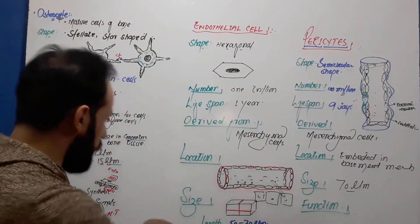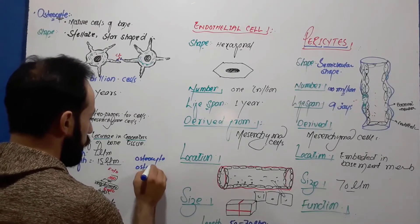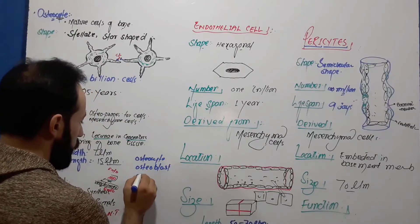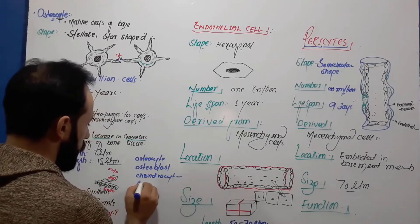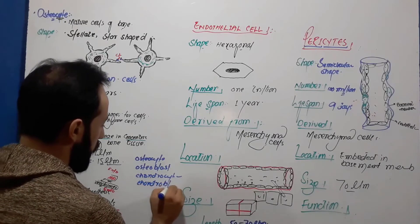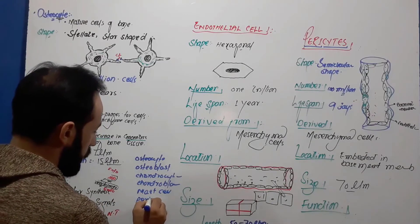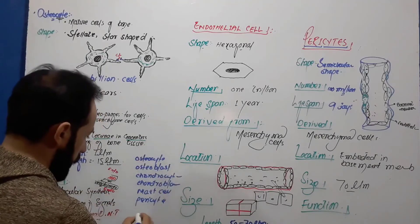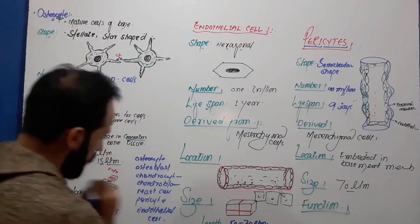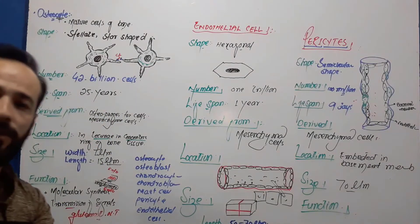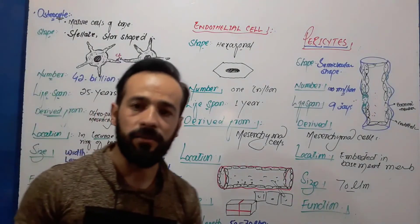So we are now finished with the cells of connective tissue. We covered osteocyte, osteoblast, chondrocyte, chondroblast, mast cell, pericyte, and endothelial cell — all discussed in a simple way. I hope you will remember all these cells.